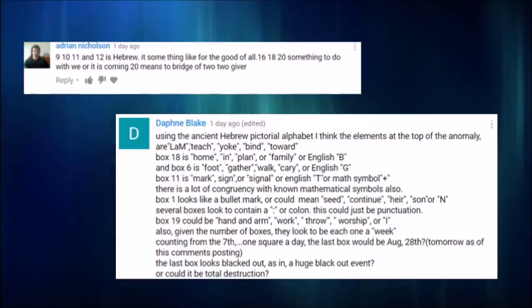Several boxes seem to contain a dot or colon. This could just be punctuation. Box 19 could be hand and arm, work, throw, worship, R, I. The last box was blacked out. I think it means a dark outlook for us. Thanks for the help in decoding, but that did not make the decoding any easier. At least to me. But put all these together. I think it could mean we need to bind like a family and learn to walk hand in hand together to continue. That would be a beautiful message, right?